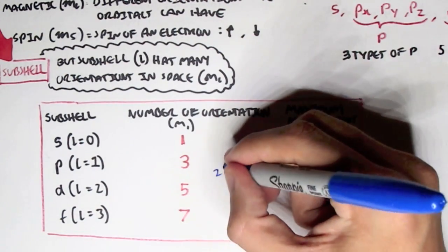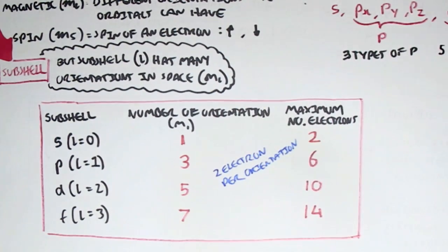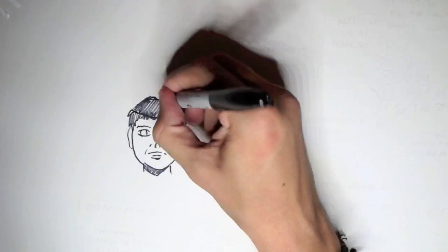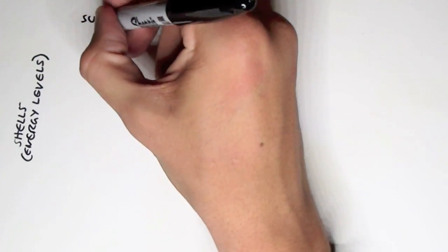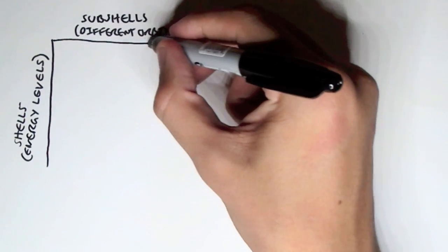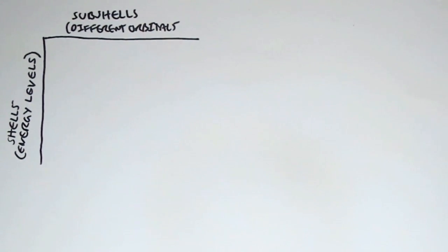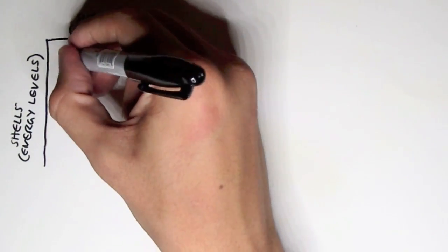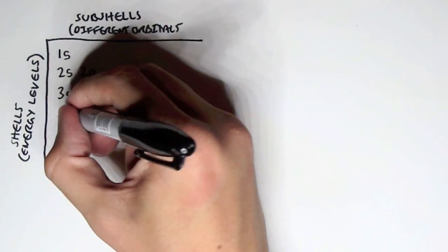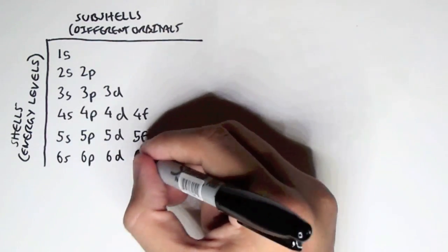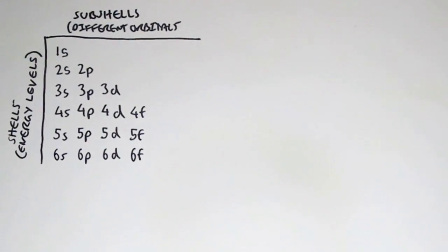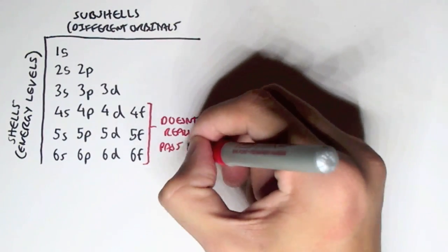An important point to remember is that a maximum of 2 electrons can fit in each orbital. Taking all this information, we can understand electron configuration. Here we have the shells — the energy levels — and the subshells the electron occupies: 1s, then 2s and 2p, then 3s, 3p, 3d, then 4s, 4p, 4d, 4f, and 5s, 5p, 5d, 5f, 6s, 6p, 6d, 6f. Notice that we don't go past the F orbitals.